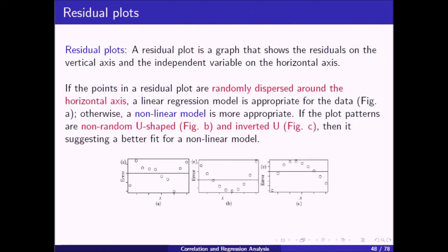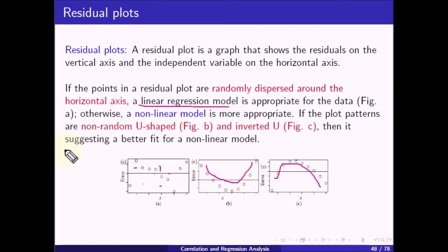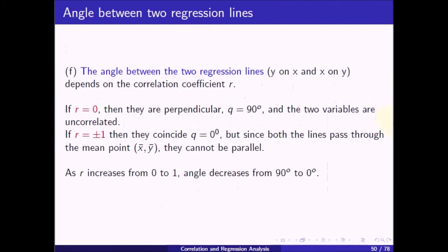A residual plot is a graph showing residuals on the vertical axis and the independent variable on the horizontal axis. If the points are randomly dispersed around the horizontal axis, a linear regression model is appropriate. If the plot pattern is non-random — U-shaped or inverted U-shaped — it suggests a non-linear model would be a better fit. In the next video, we will talk about the angle between two regression lines.